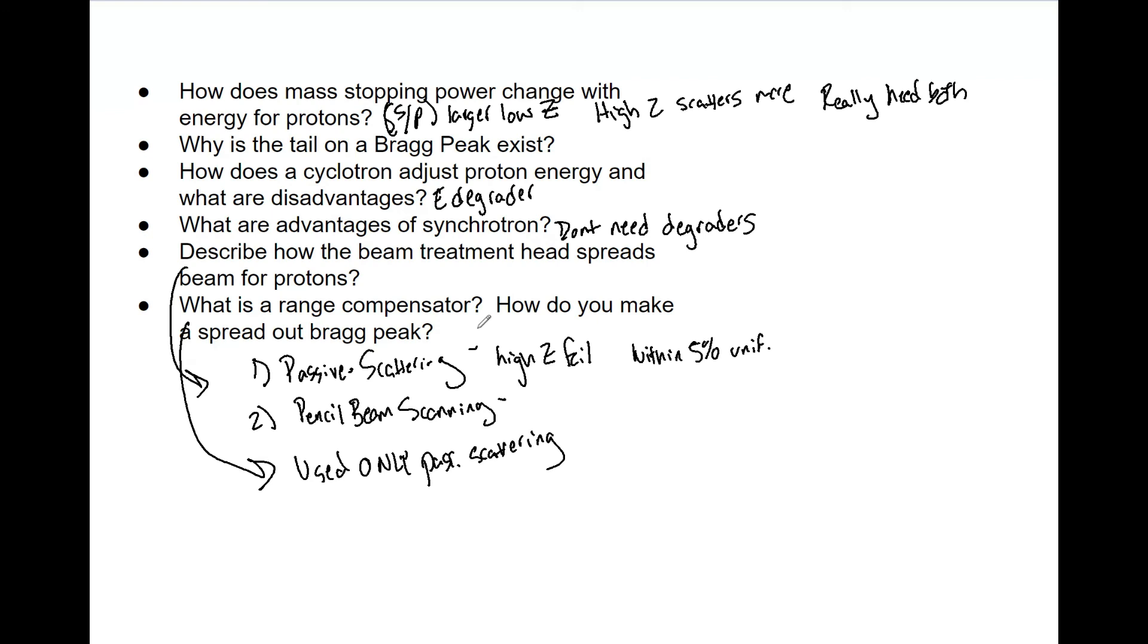Now, how do we make a spread out Bragg peak? You want to use a range modulator, which is a wheel with different thicknesses of layers of plastic to spread out that Bragg peak. I know there are a lot of terms, and that's why I made a lot of note cards and drove this home. Without working in a proton clinic, it was difficult for me to understand range compensator, range modulator, passive scattering, pencil beam scanning—there are so many terms. Protons can seem like their own world.